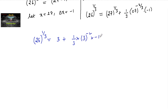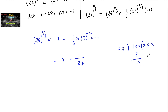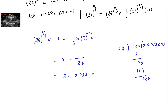This simplifies to 3 minus 1/(3 × 3²) = 3 minus 1/27. Computing 1/27 by long division gives 0.037037..., which repeats. Rounding, 1/27 ≈ 0.037. Therefore, 26^(1/3) ≈ 3 - 0.037 = 2.963. The approximate value of 26^(1/3) using differentials is 2.963.